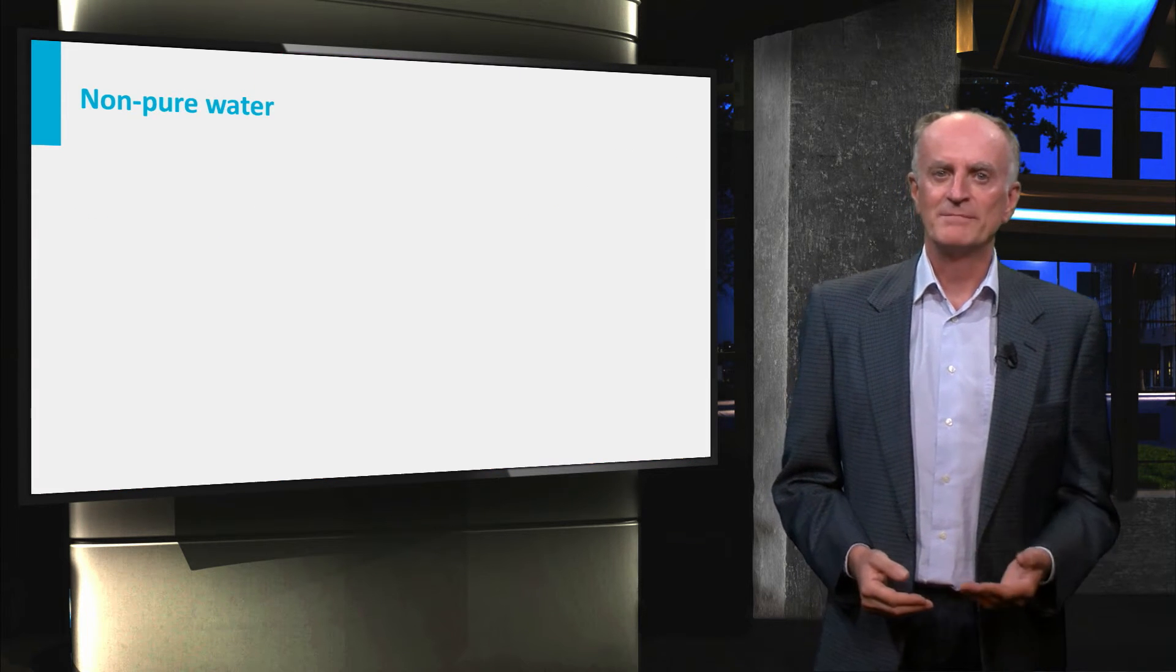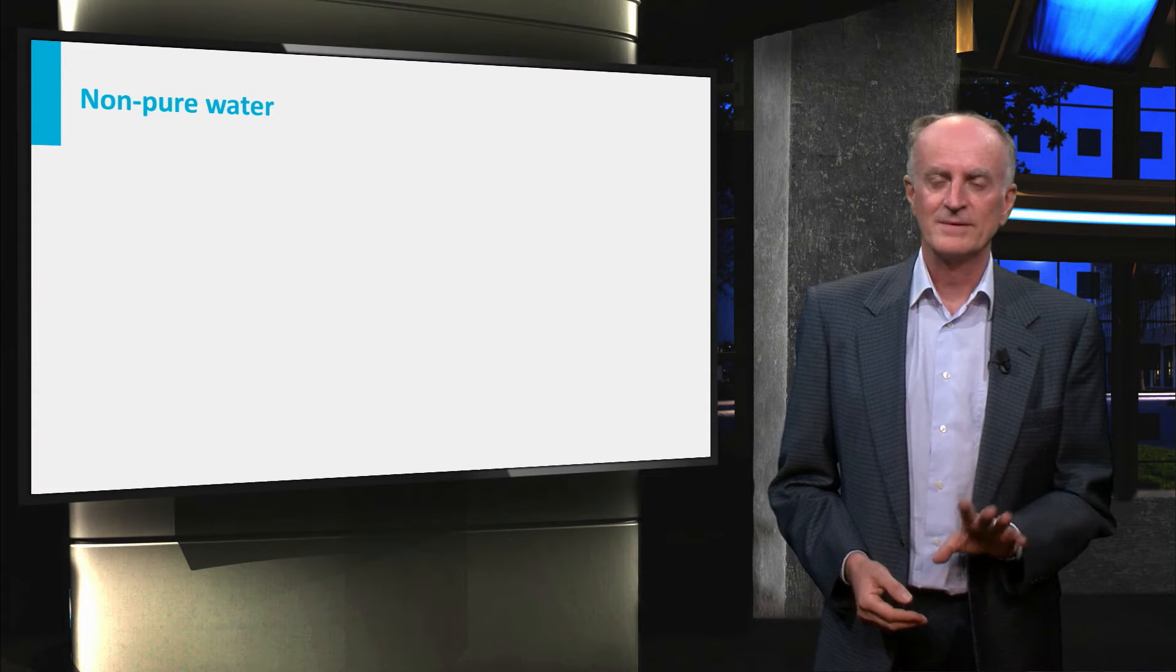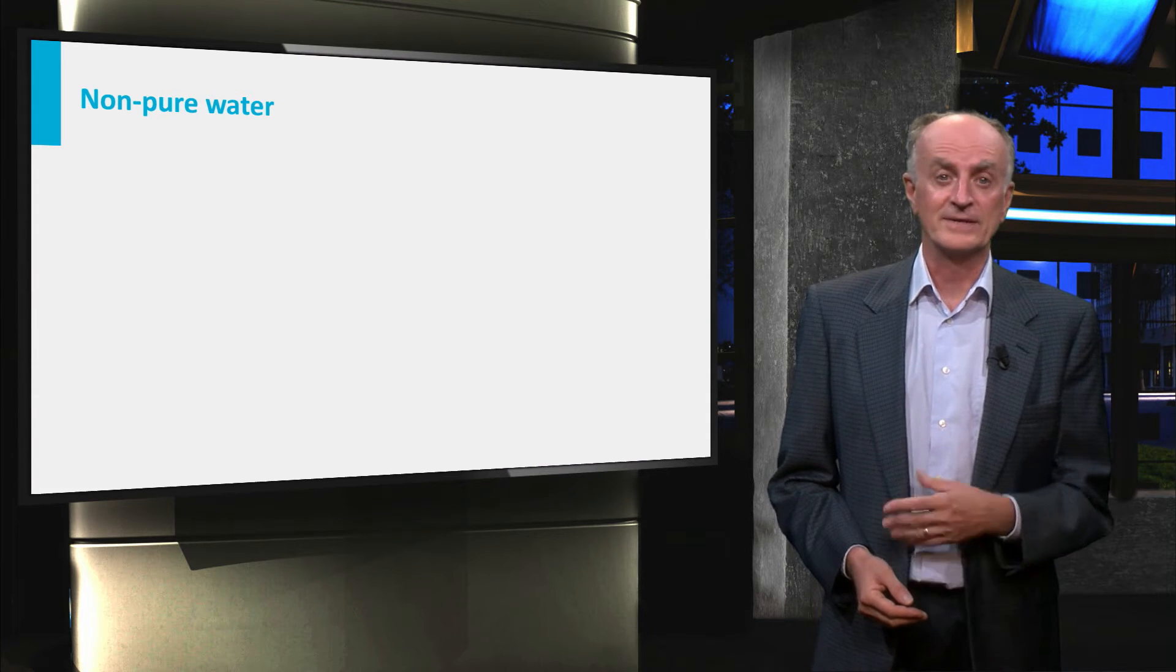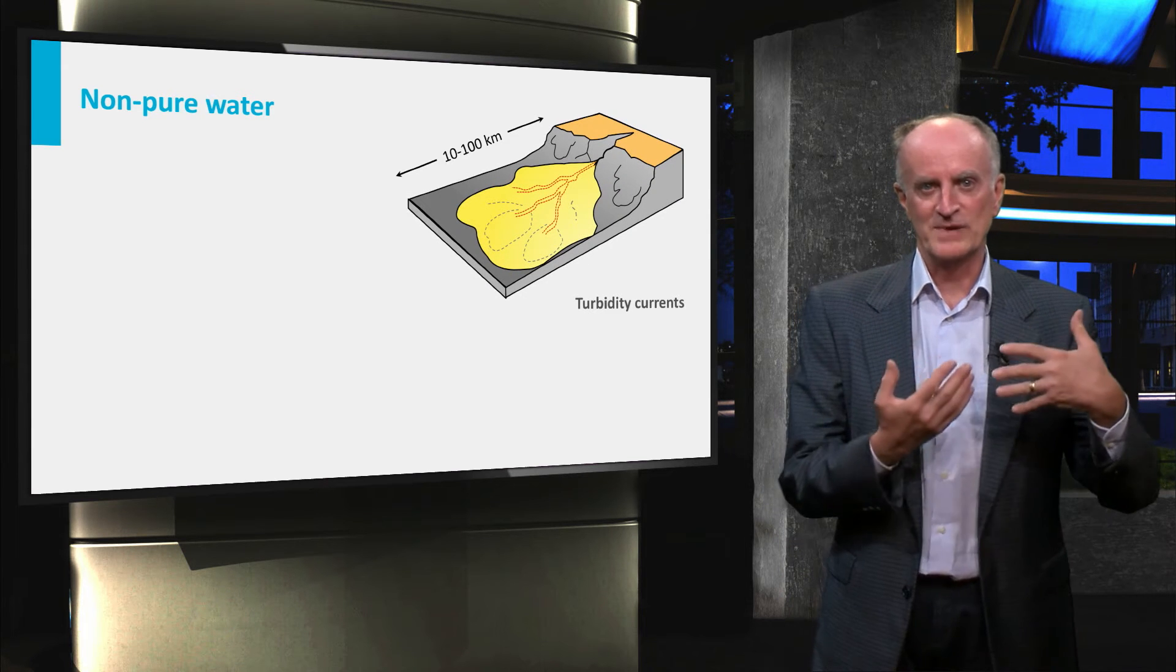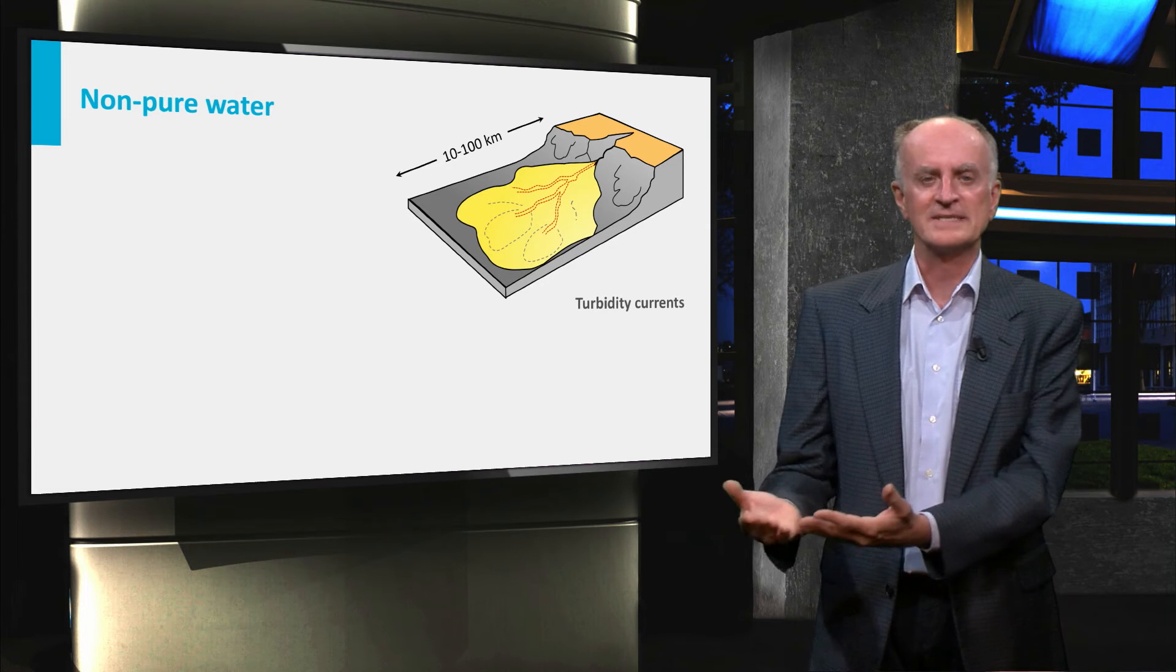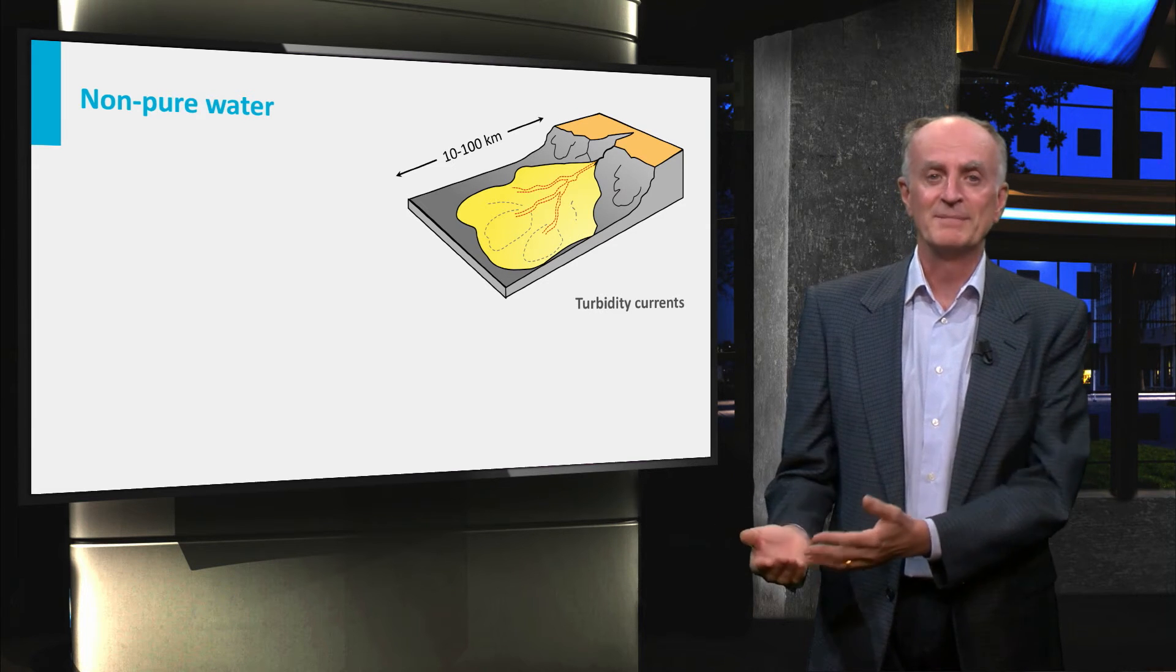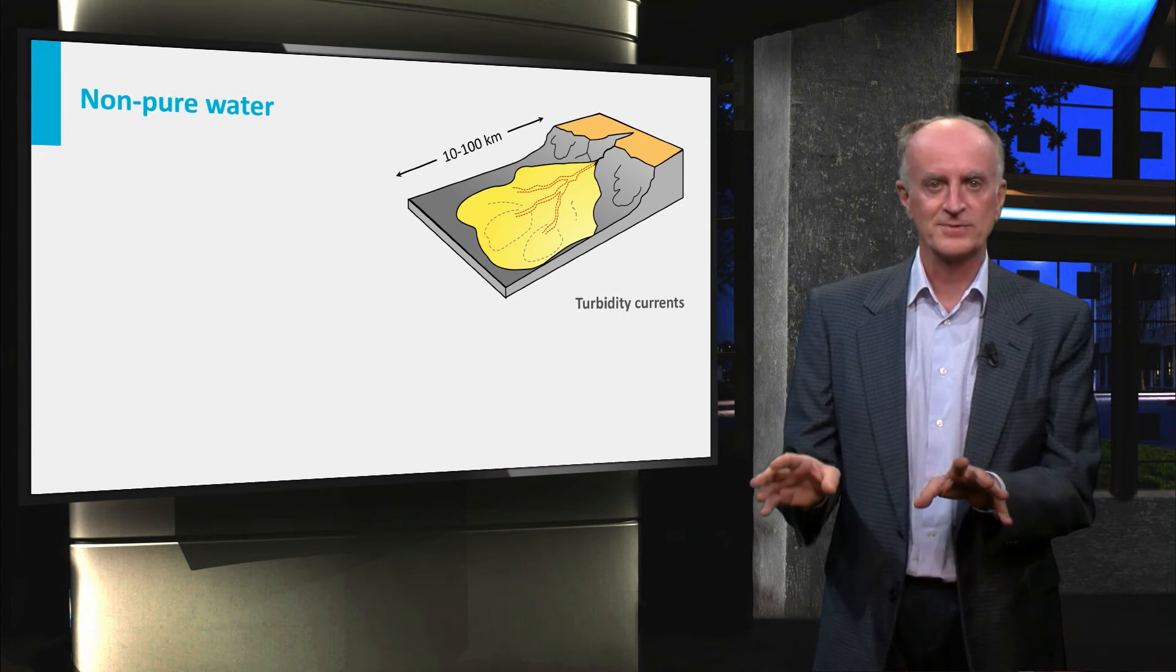The density values we have mentioned are for pure water. When this is not the case, things are different. In a previous clip we have discussed turbidites, currents which travel for hundreds of kilometers down the continental slope driven by their density higher than the surrounding water.